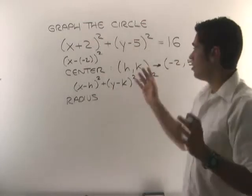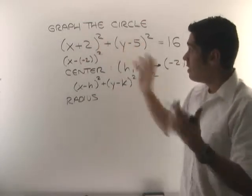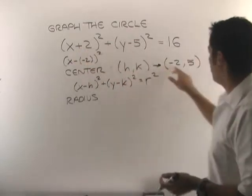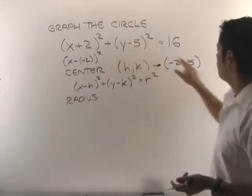Now an easier way to do that is just to look at each of the numbers and just take their opposite. So here you have plus 2, you put minus 2. Here you have negative 5, you just put positive 5.